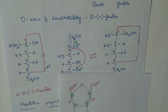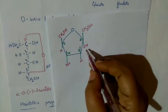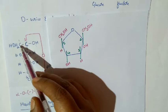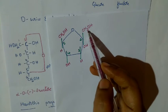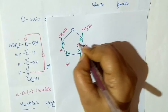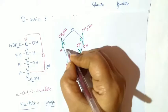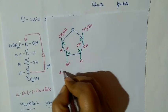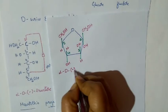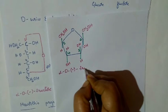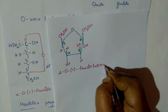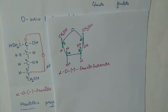We shall complete this structure first, then discuss other things. We have written the right-side substituents. For the left side: third carbon has OH, fourth carbon has hydrogen. So this is our alpha D-minus fructofuranose structure.